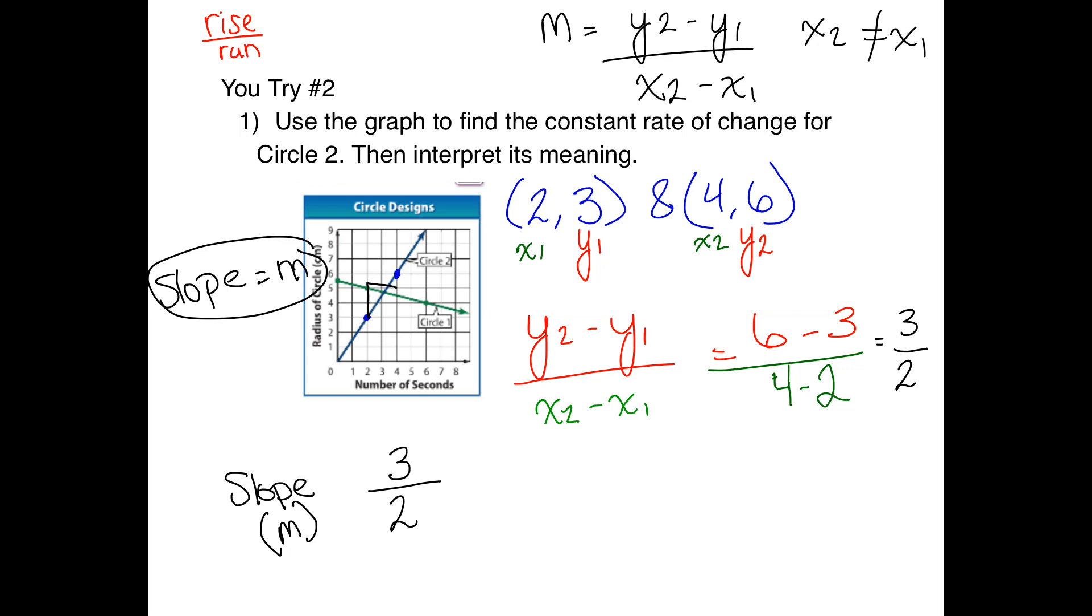We can leave it as 3 over 2 because this tells us our rise - we're going to go 1, 2, 3 up and 1, 2 over. Now you can check and make sure that when you use your rise over run, you are getting to the same point. You can make this as simple as it can be, but this is pretty much it. Make sure you keep slope as a fraction.